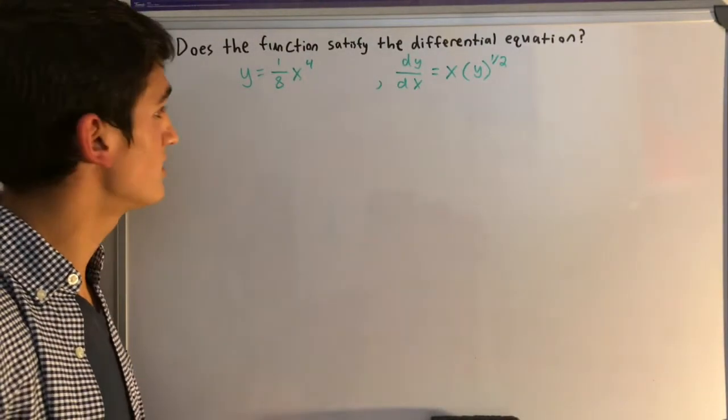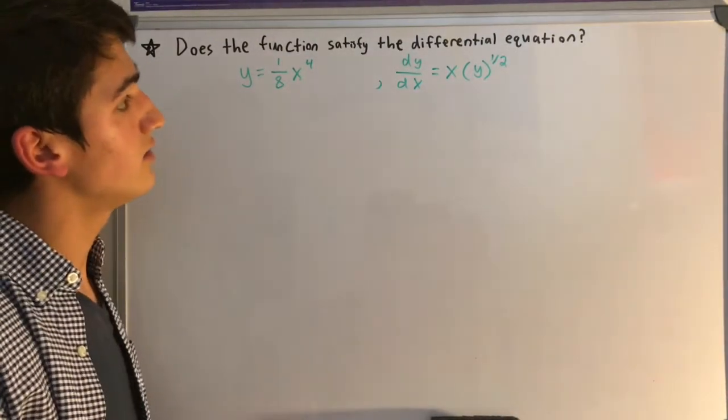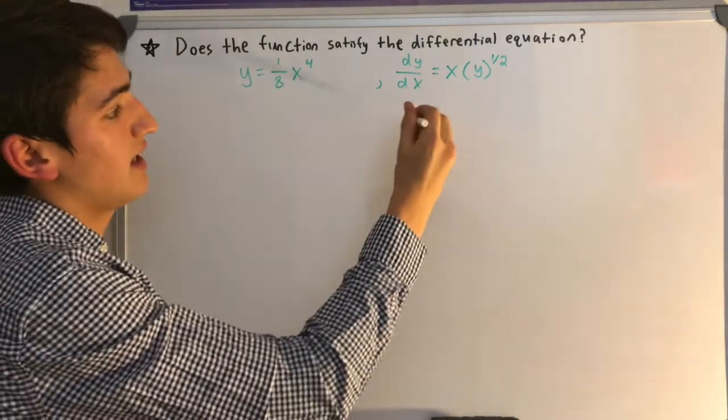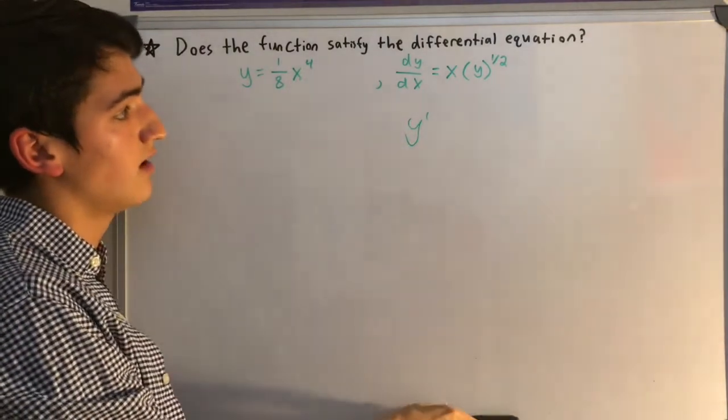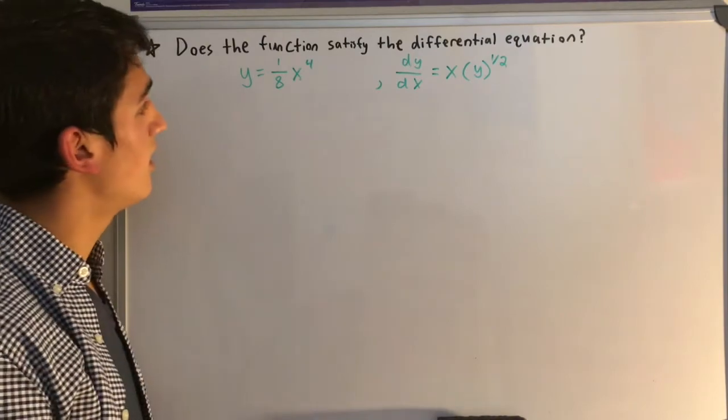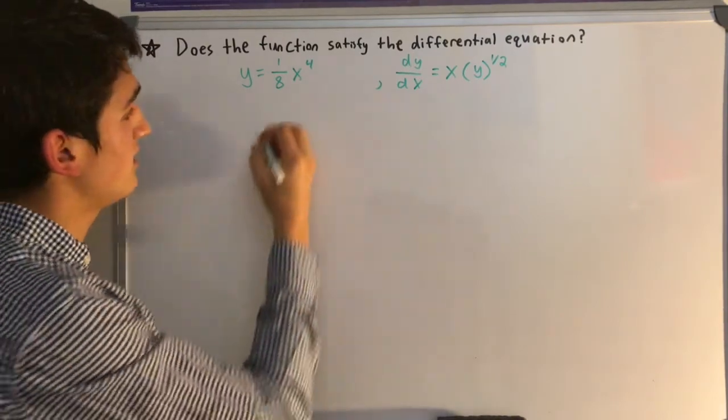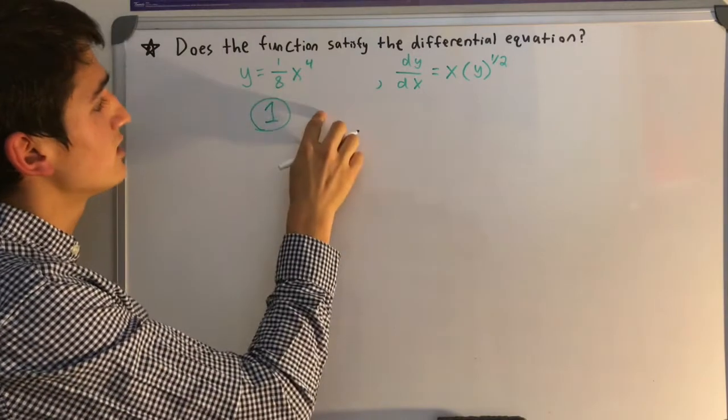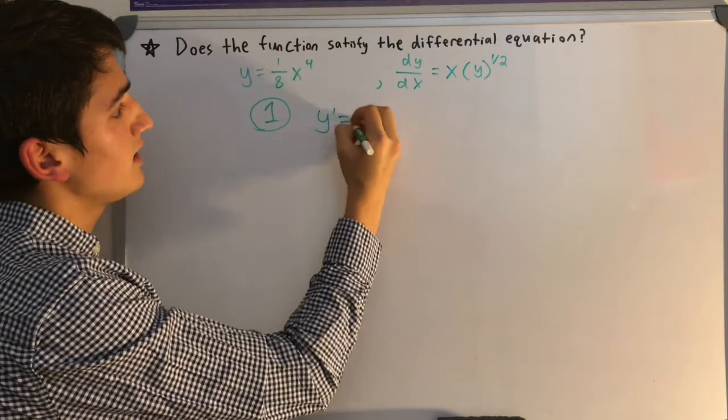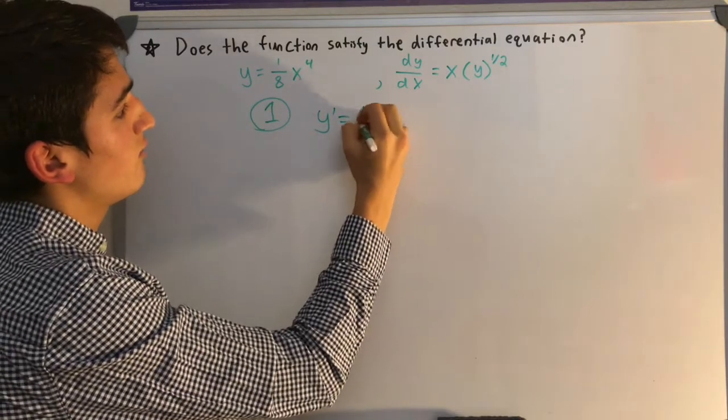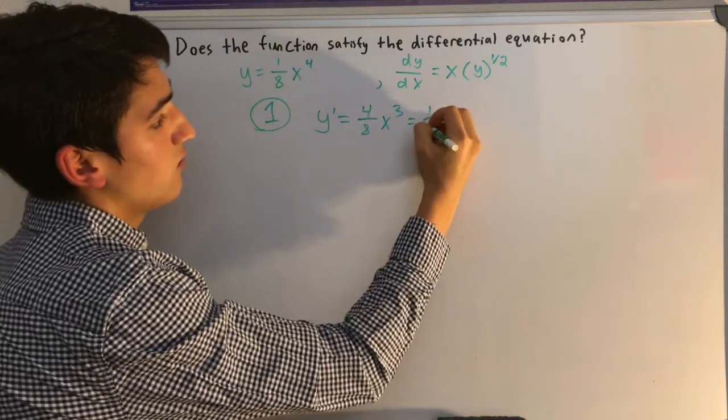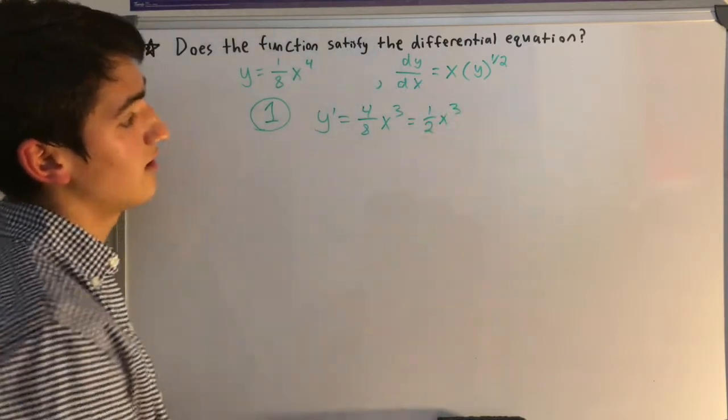On to example number 2, we've got a new function and a new differential equation. So obviously, dy/dx is the same as y prime with respect to x. So same deal with this one. Same process here. We start with step 1. So we take the derivative of the y equation, which is simply y prime equals 4 over 8 x to the third, which is simply 1 half x to the third.